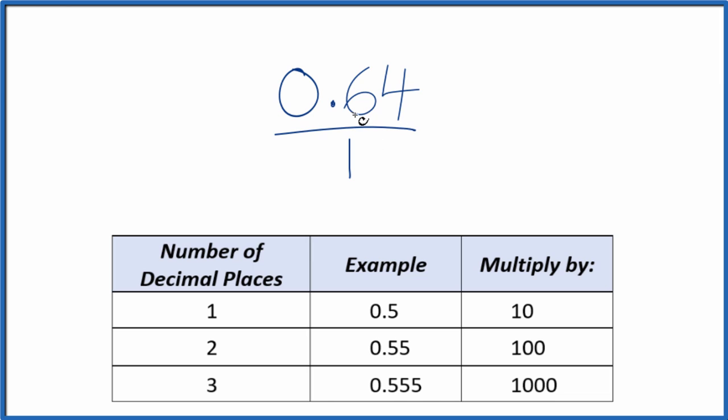What would be nice is if we could get this 0.64 to a whole number, and to do that we could multiply by 100. That's because we have two decimal places, 1, 2, and with two decimal places we multiply by 100 and that'll give us our whole number.